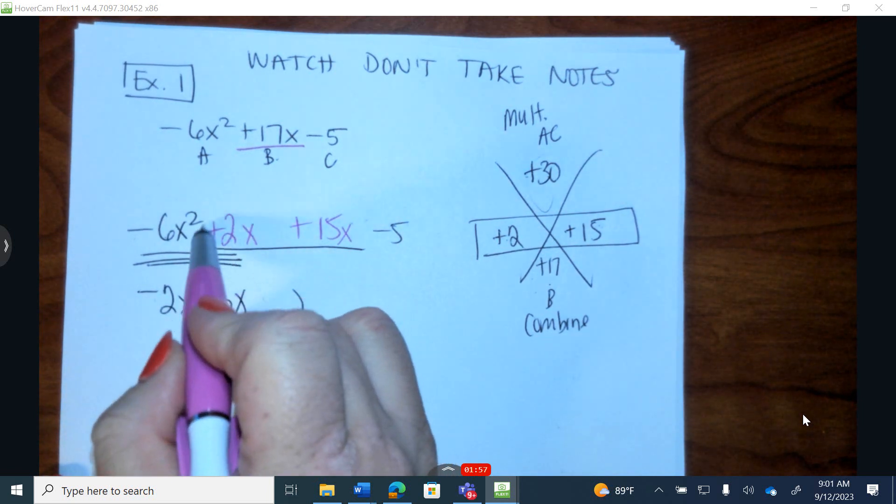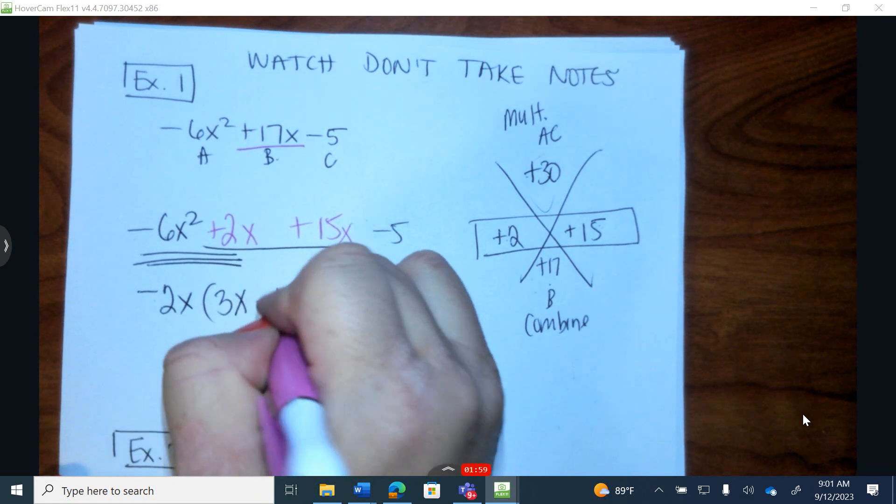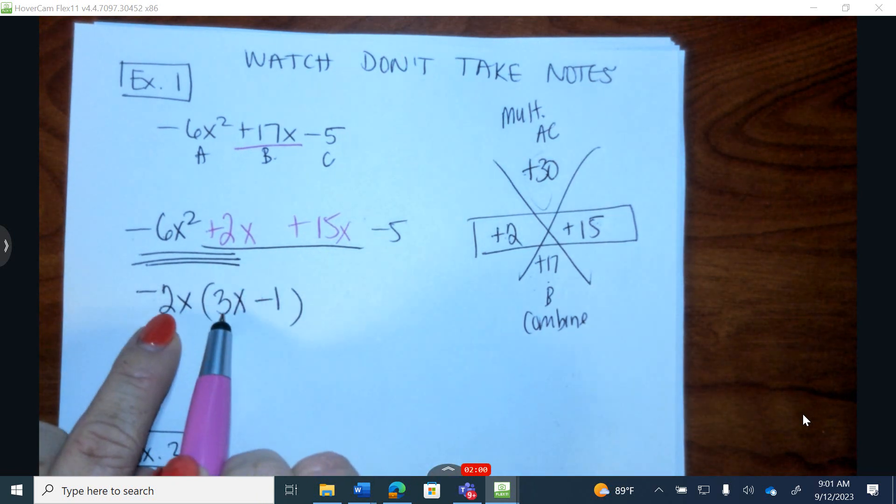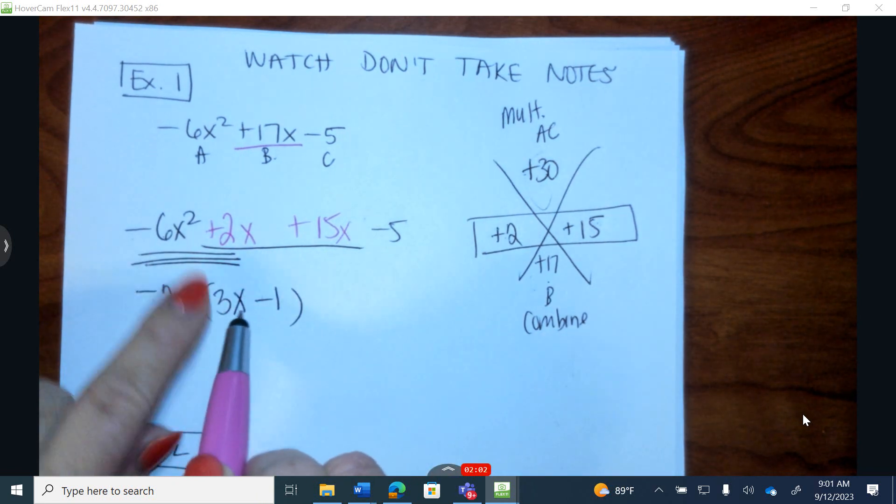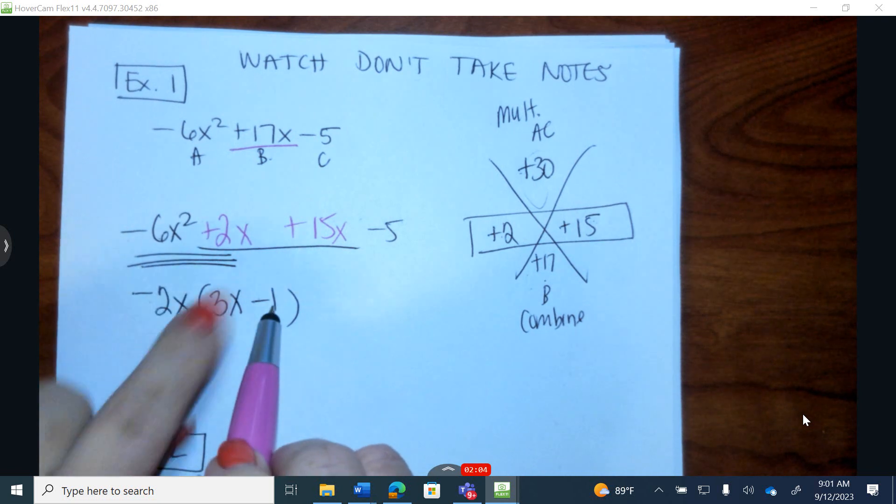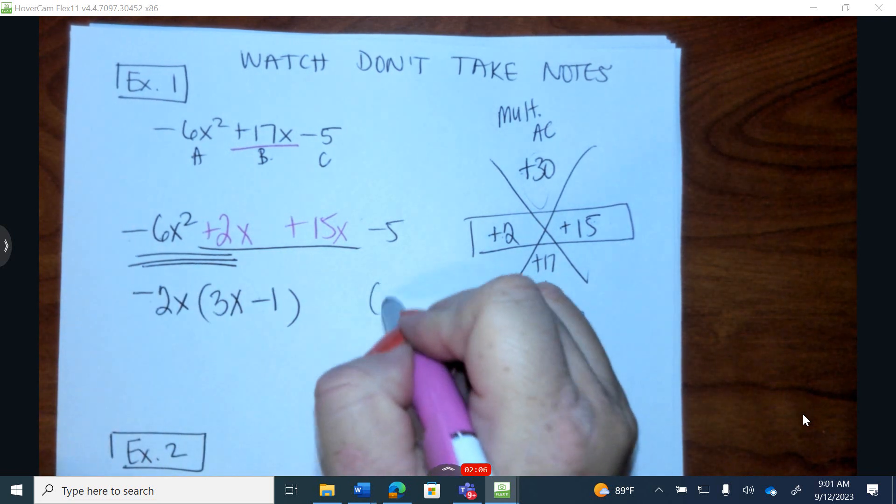Negative 2 times what gives us a positive 2? Negative 1. So when I distribute, which is a multiplicand, I get negative 6x squared and negative 2x. Whatever's in parentheses goes in back.